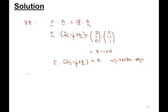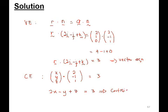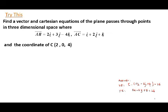From our vector equation, we need to find the Cartesian equation. Rewrite R in terms of the vector (x, y, z) in matrix form, dot with vector N (2, -1, 1) equal to 3 from our vector equation. This is a dot product, so we have 2x minus y plus z equal to 3. This is the Cartesian equation of the plane. Before we end the class, do this example and submit to your lecturer.